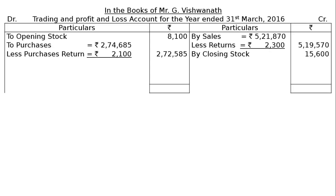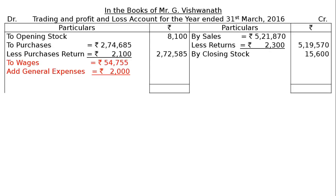Then other factory or trading expenses — direct trading expenses — to wages Rs. 54,755. We have to read the fourth adjustment: general expenses include Rs. 2,000 paid for wages. Hence, Rs. 2,000 will be excluded from general expenses in the profit and loss account and added to wages account to reflect the actual amount. The total wages in the trading account will be Rs. 56,755. The credit side total will be Rs. 5,35,170.